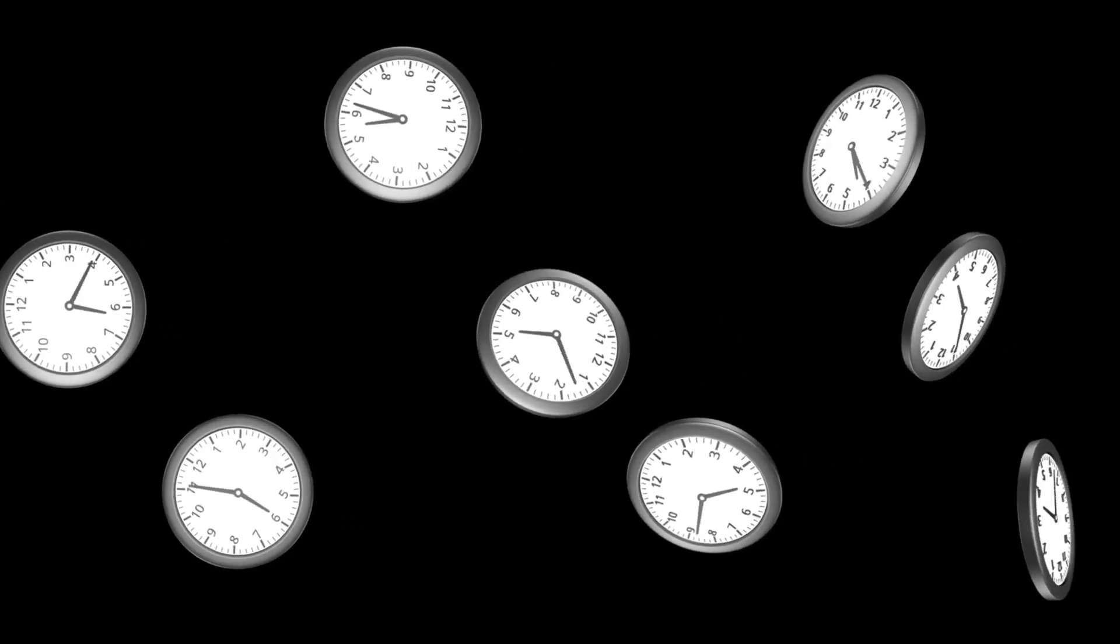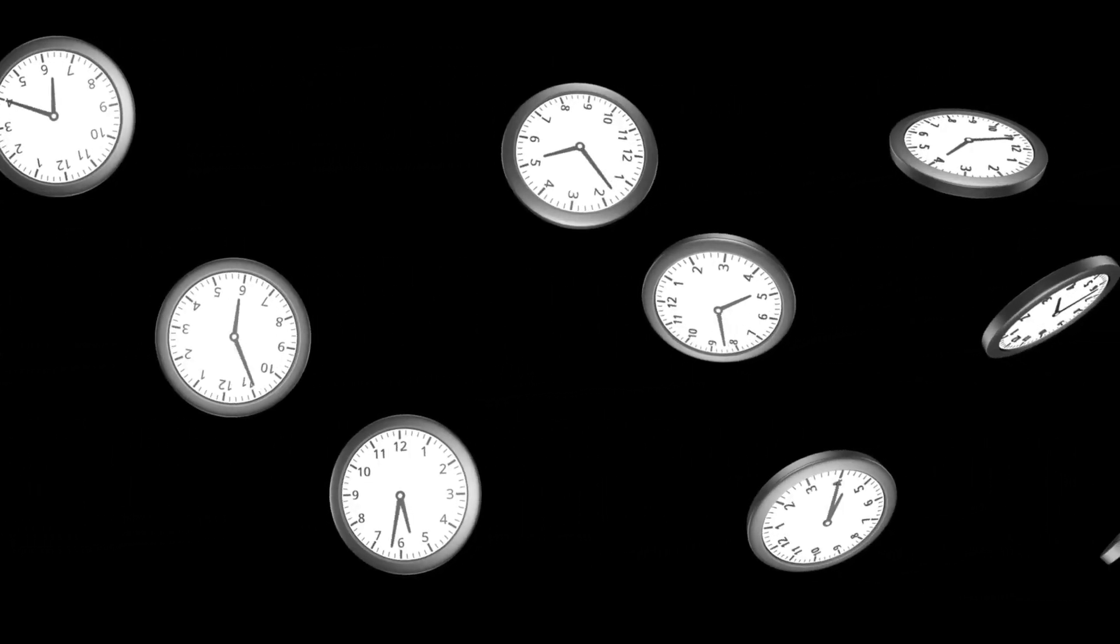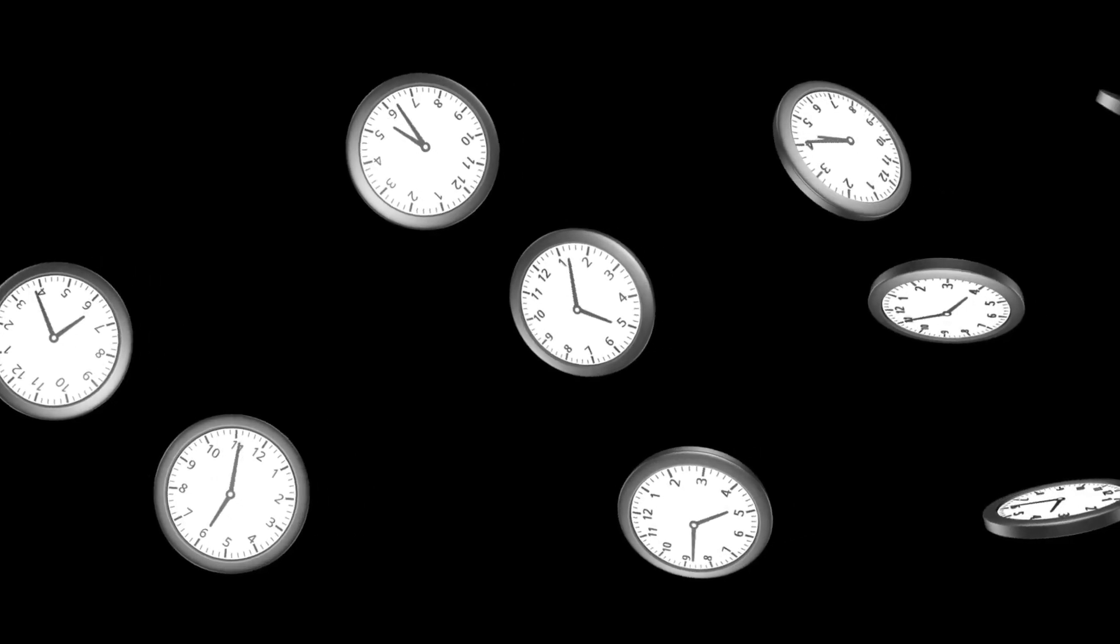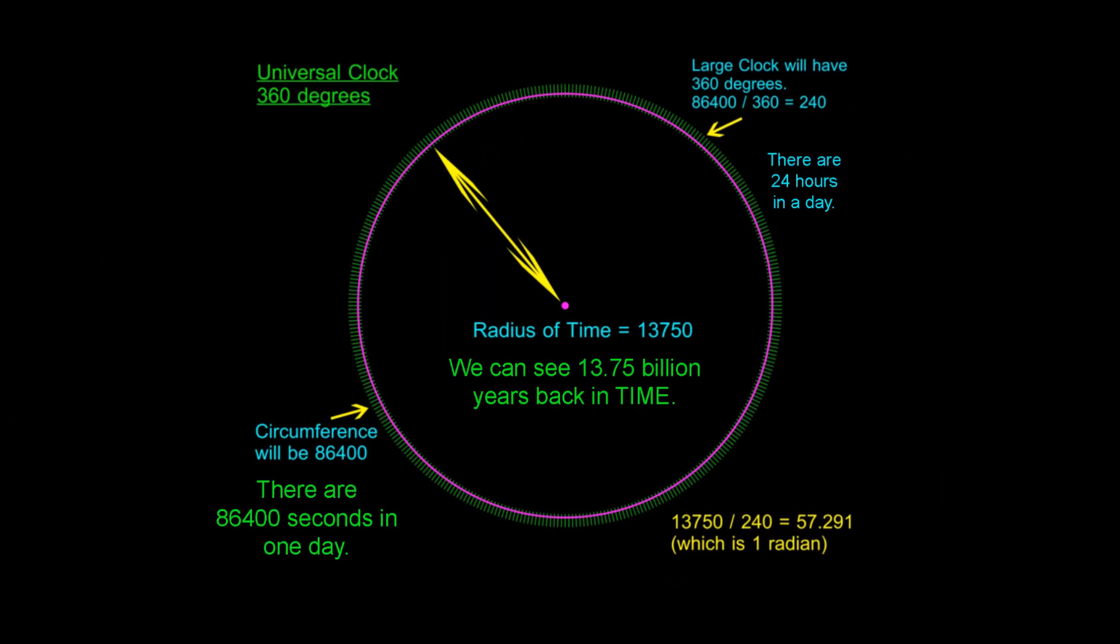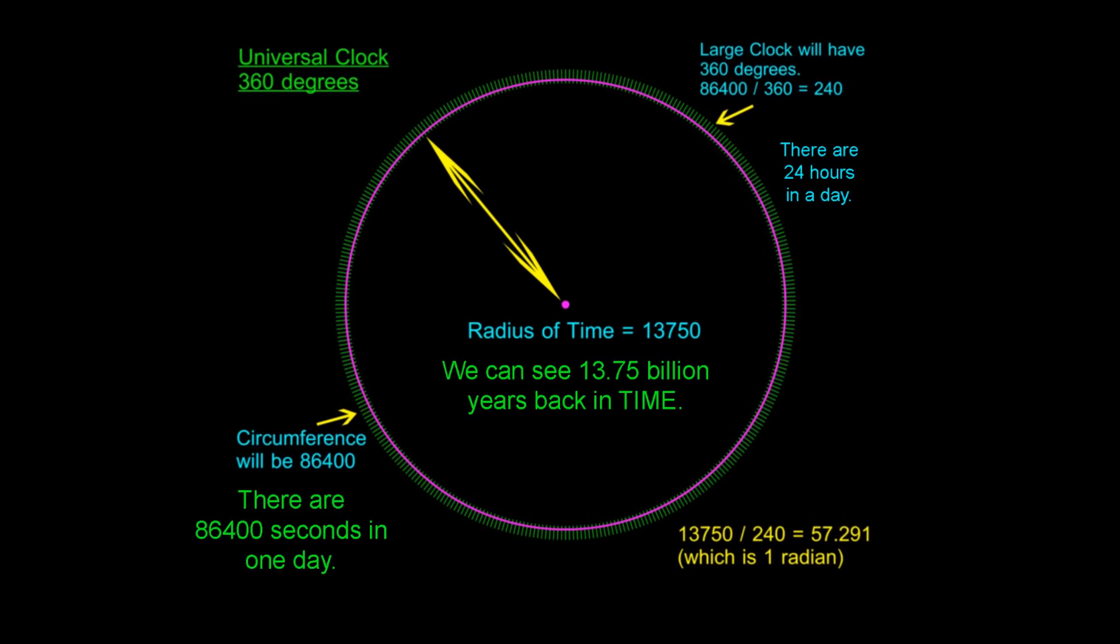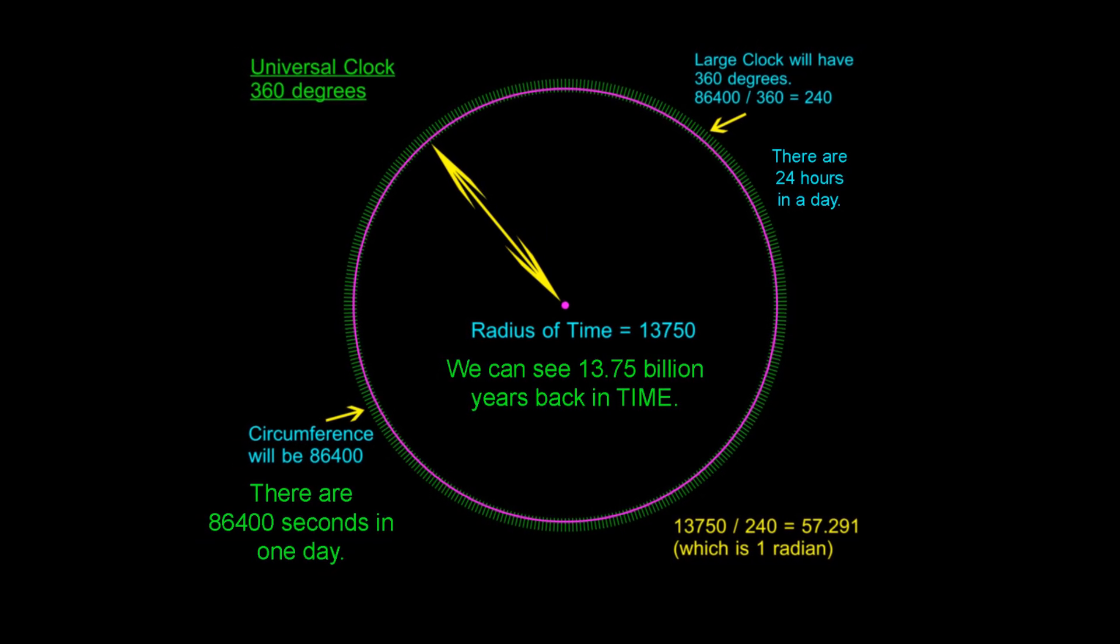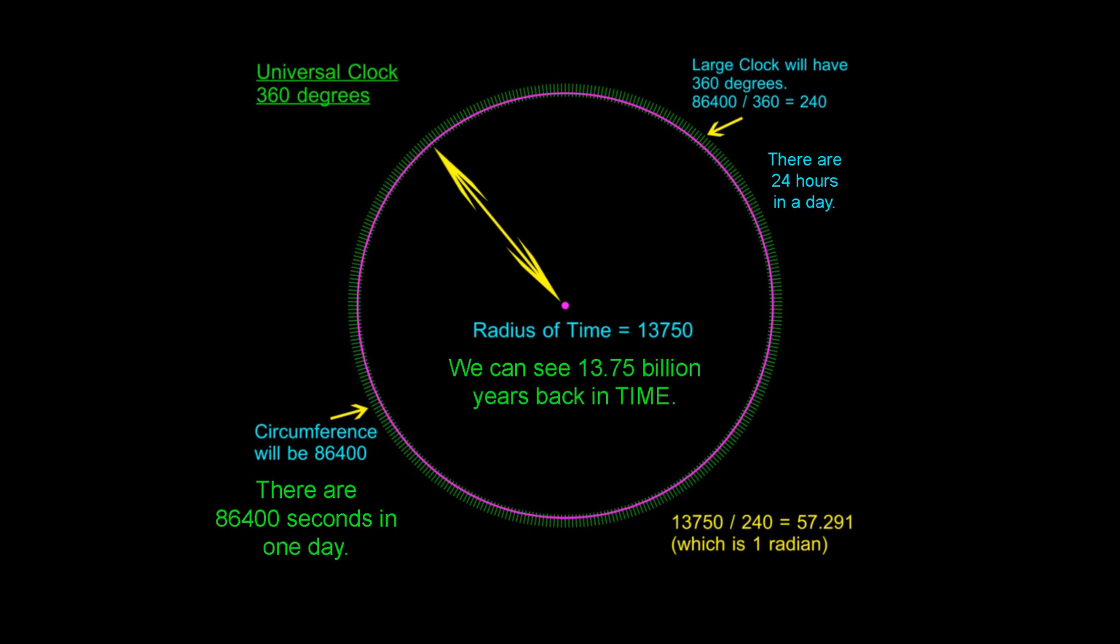The circumference of that circle is only 86,400 seconds because we humans have somehow settled on these units for measuring time. The radius of that circle is 13,750 units. What science is calling the age of the universe is simply the radius of this circle that is created as the Earth rotates.